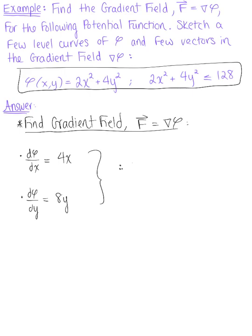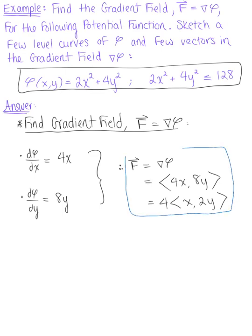Therefore, the gradient field ∇φ is defined by the components ⟨4x, 8y⟩. We can simplify this by pulling out the common factor of 4, leaving us with the scalar multiple 4 times the vector ⟨x, 2y⟩. This is our final answer for the gradient field.